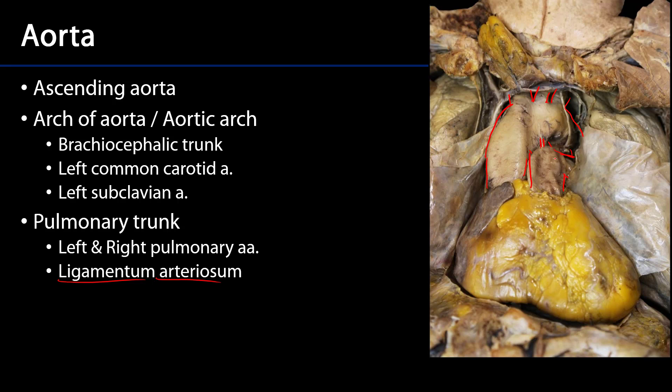The ligamentum arteriosum would conduct relatively oxygen-rich blood coming from the placenta, having traveled through fetal circulation through the pulmonary trunk to the arch of the aorta. In effect, it's a bypass of pulmonary circulation for that blood.